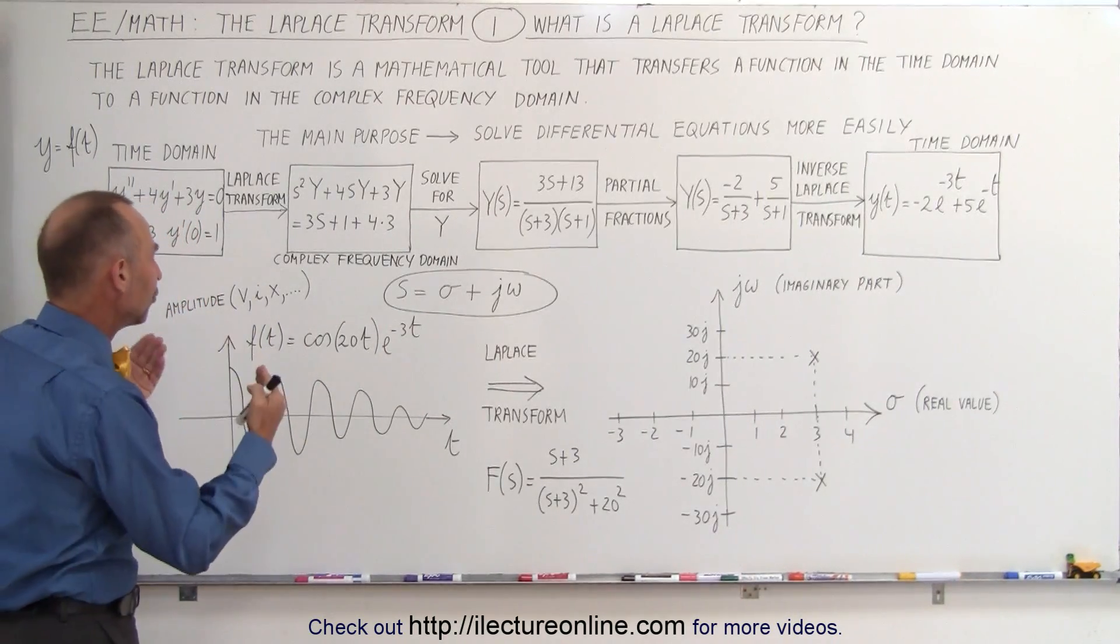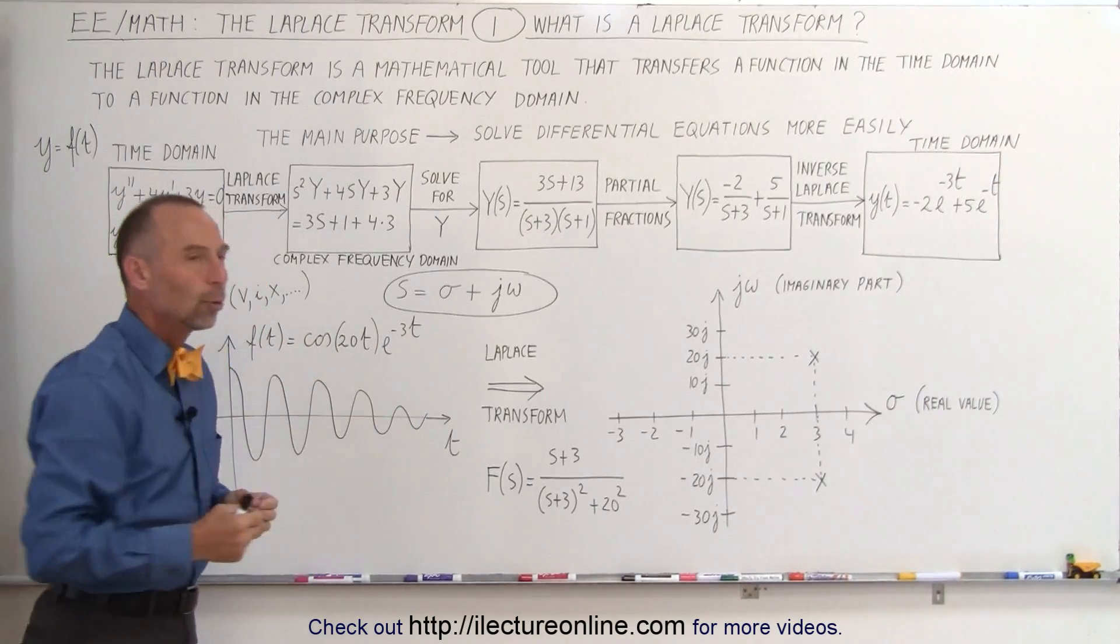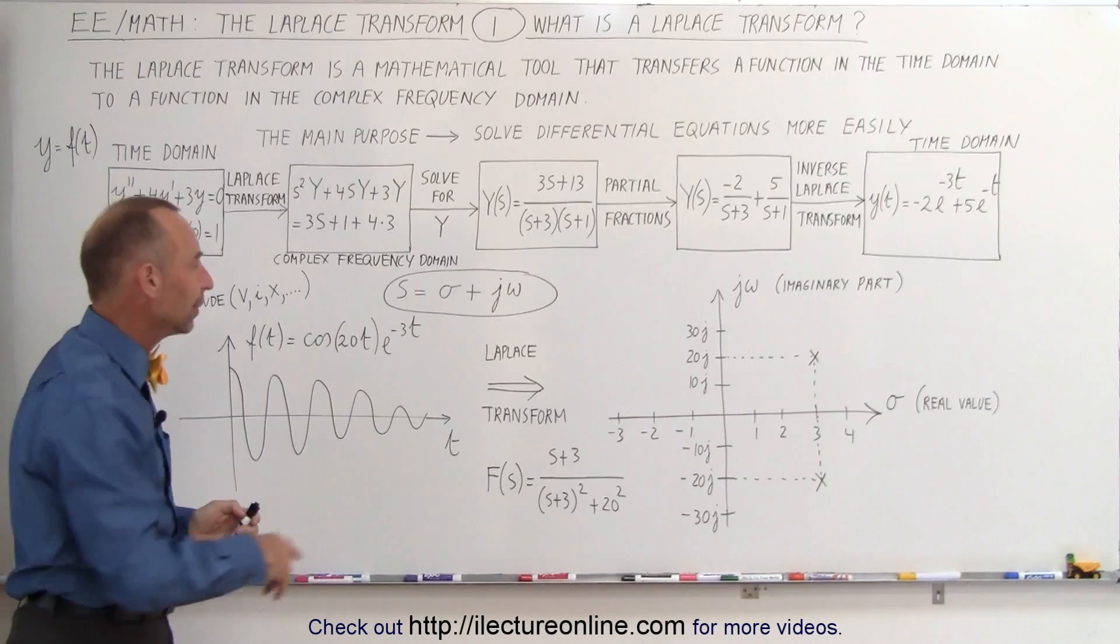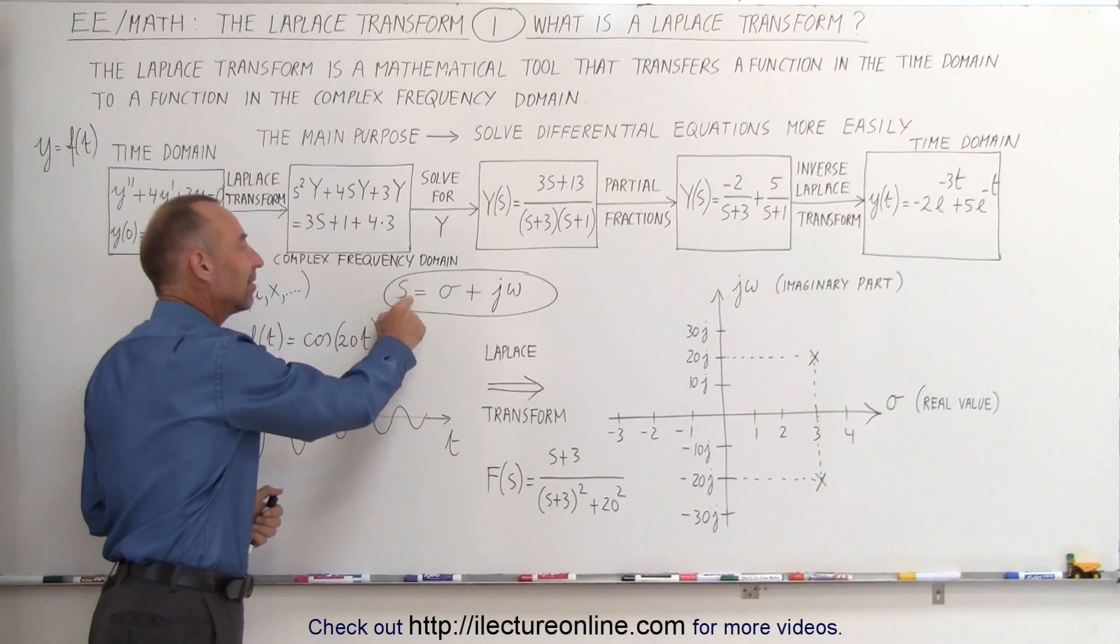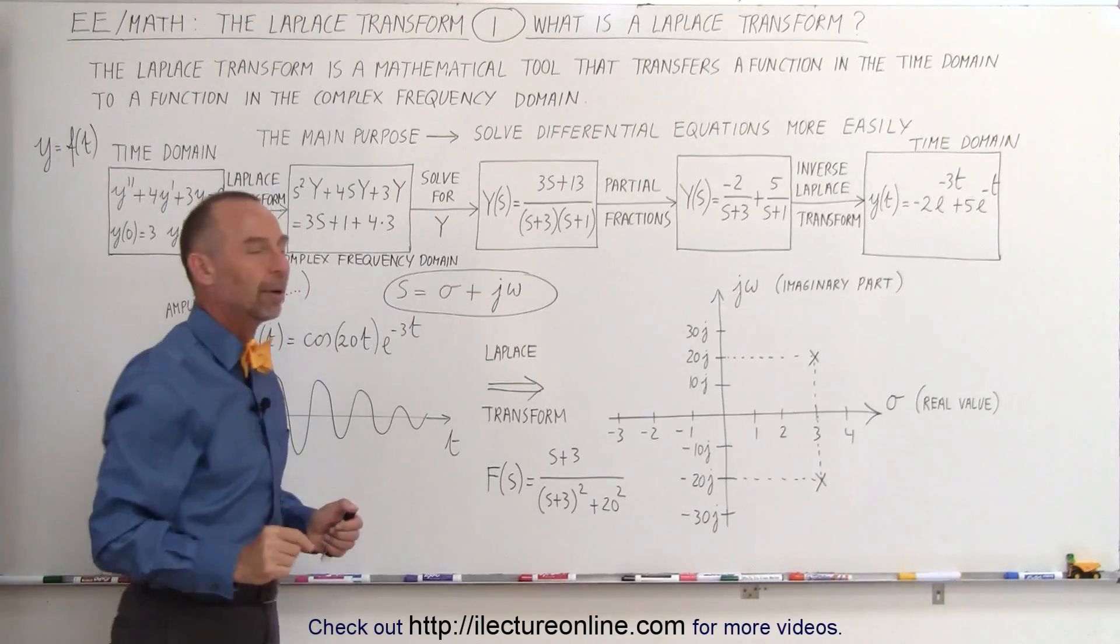When we do a Laplace transform, we transform this function into a new function where it now becomes dependent on the variable s. s is a complex number. It has a real part and an imaginary part.